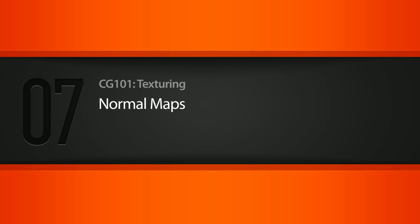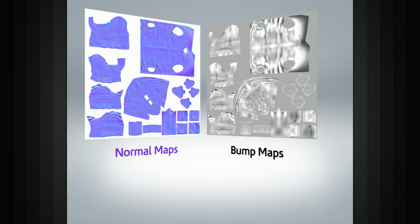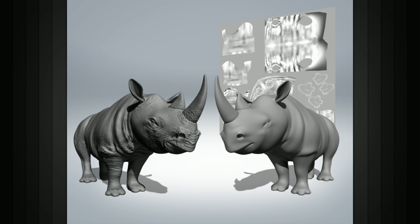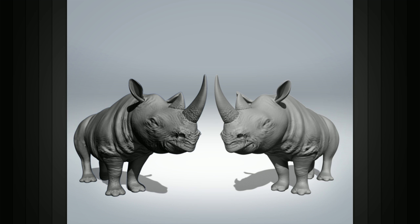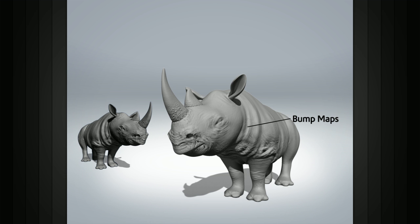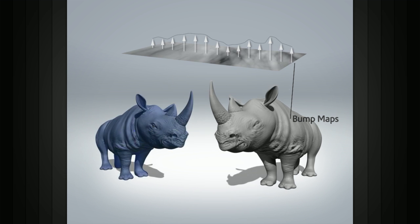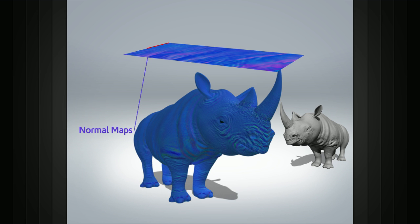In this lesson we will learn about normal maps and how they are used. Normal maps are similar to bump maps in that they both affect the normals of our geometry and create the illusion of detail without having to rely on a high poly count. The major difference is that bump maps simply encode height information using black and white values, but normal maps actually use RGB values to signify the orientation of the surface normal.